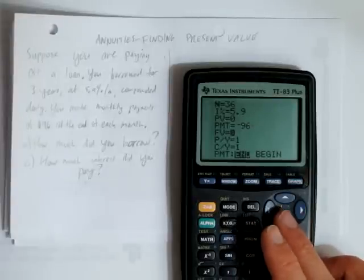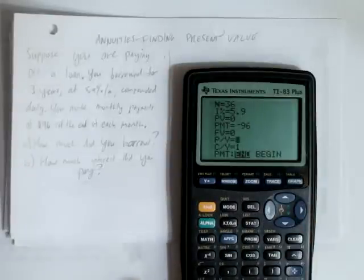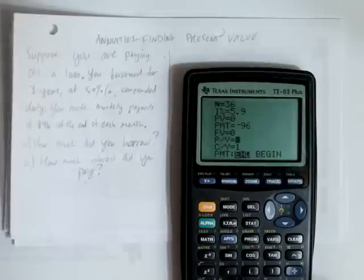Our future value will be zero, just leave it as zero, or if it was something else, change it to zero. Our payments per year is how many times per year we make a payment, which is 12.